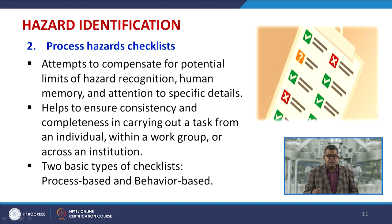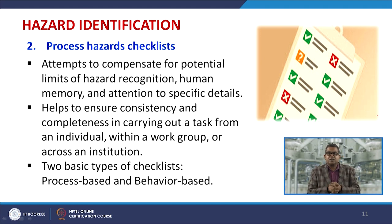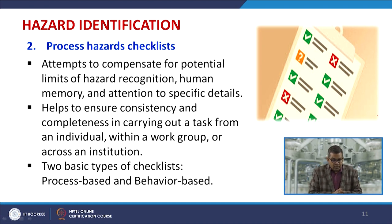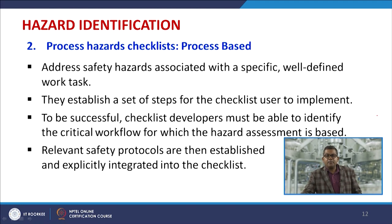The next step is the process hazard checklist. This is an attempt to compensate for the potential limits of hazard recognition, human memory, and attention to specific details. It helps ensure consistency and completeness in carrying out tasks within a work group or across an institution. There are two basic types of checklists: process-based and behavior-based.